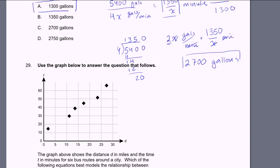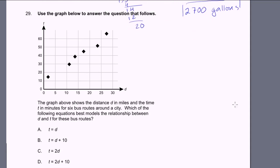Problem 29. Use the graph below to answer the question that follows. The graph above shows the distance d in miles and the time t in minutes for six bus routes around a city. Which of the following equations best models the relationship between d and t for these bus routes? So these are different bus routes.